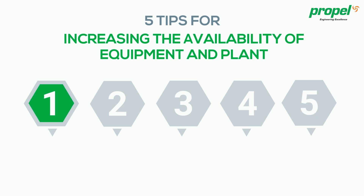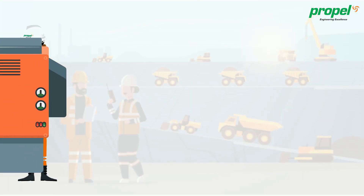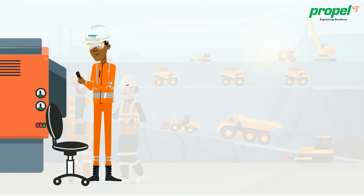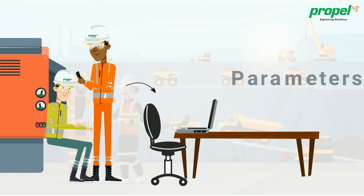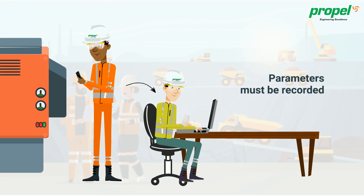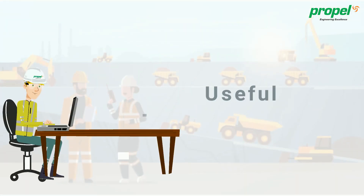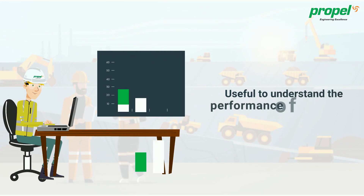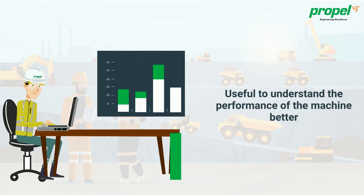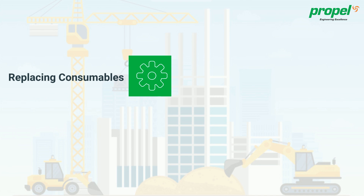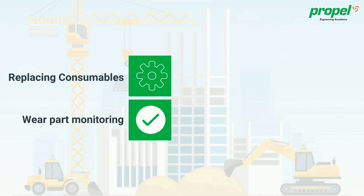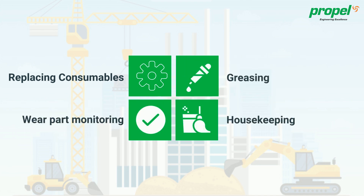Number 1: Effective Maintenance. Maintenance should be carried out in every shift and the parameters must be recorded. By doing this, you can understand the performance trend of the machine better, implement the steps of replacing consumables, wear part monitoring, greasing, and housekeeping.